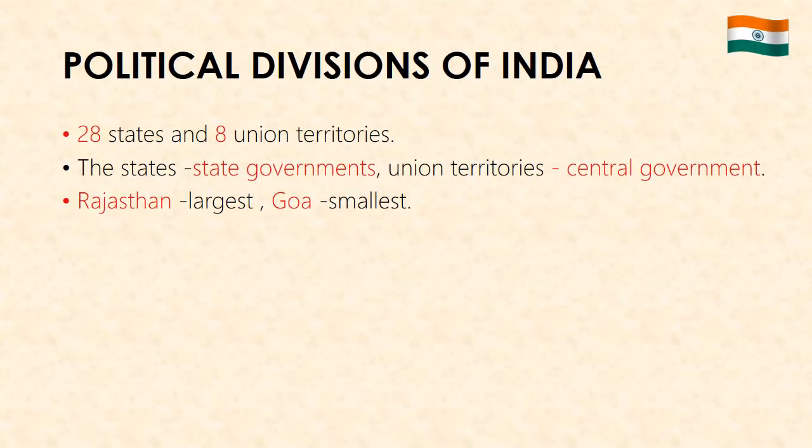Political Divisions of India: The Democratic Republic of India is made up of 28 states and 8 union territories. The states are ruled by elected state governments, while the union territories are ruled by the central government directly. In terms of area, Rajasthan is the largest state of India, while Goa is the smallest one.